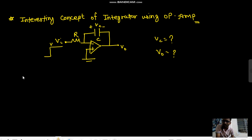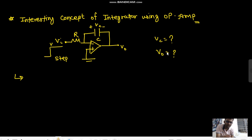Hello everyone. In this video I will discuss one interesting concept of an integrator using an op-amp. This is your integrator and this is the input waveform — a step input. You have to draw the output waveform of V0 and Vc, the voltage across the capacitor, and also V-negative.